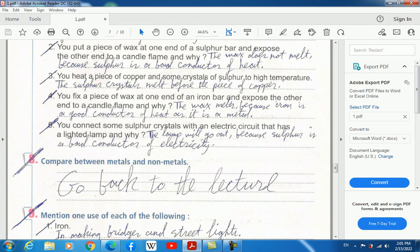You put a piece of wax at one end of a sulfur bar and expose the other end to a candle flame. What will happen? The wax does not melt, and this is because sulfur is a bad conductor of heat.